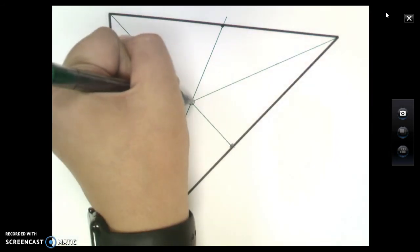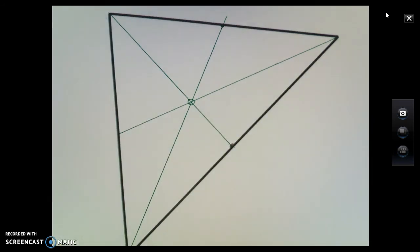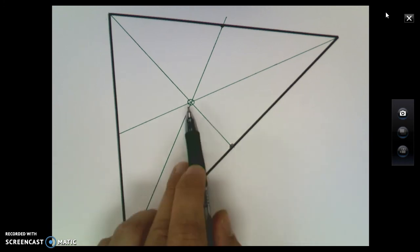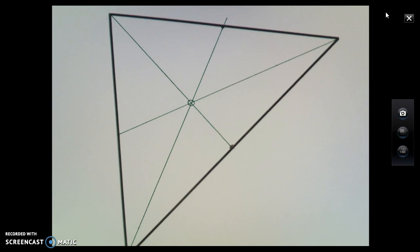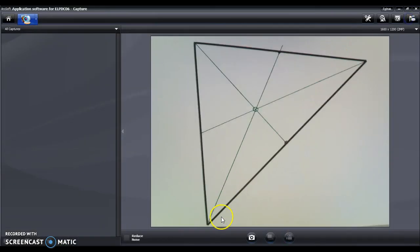The name for this particular point of concurrency, remember that's the term that we use to recognize when three or more lines intersect at the exact same place. We're going to go ahead and give this a name. And the name of this is called the centroid. And we'll be, after this project, exploring why it's called the centroid.